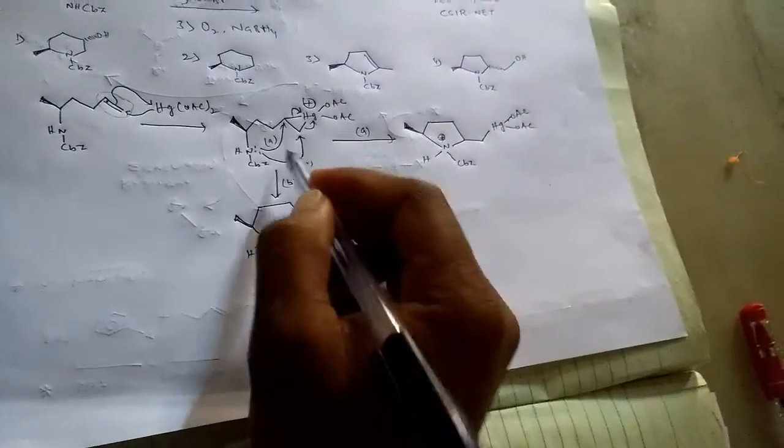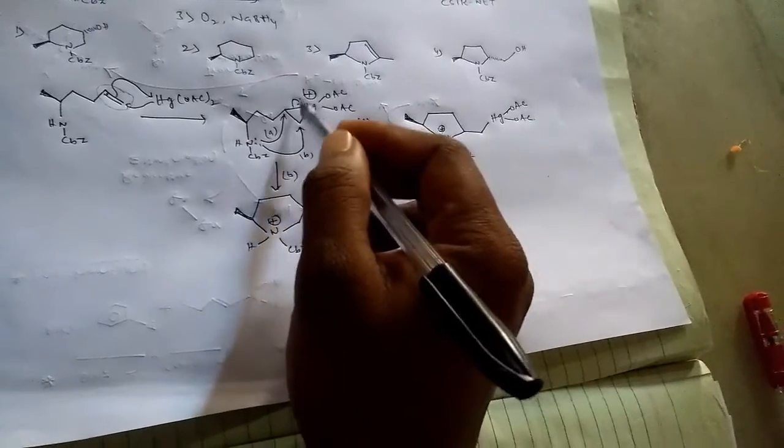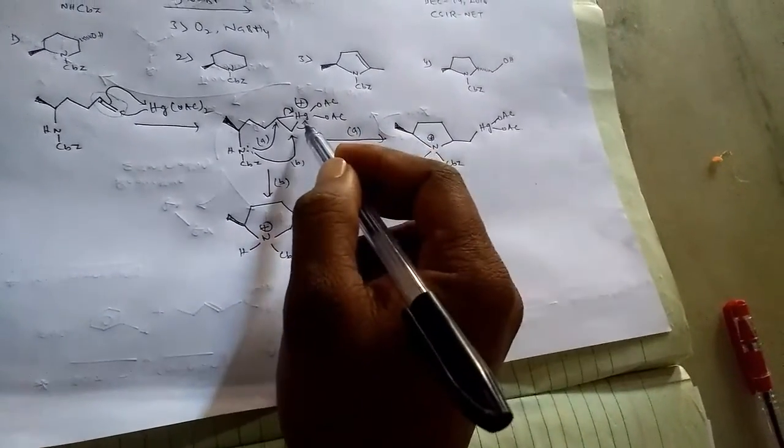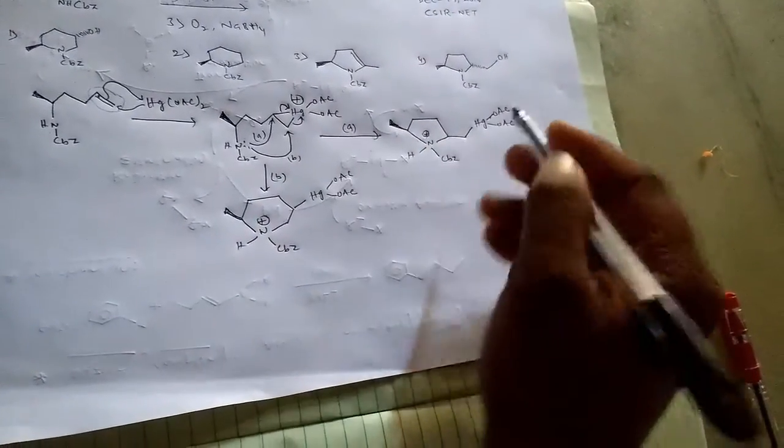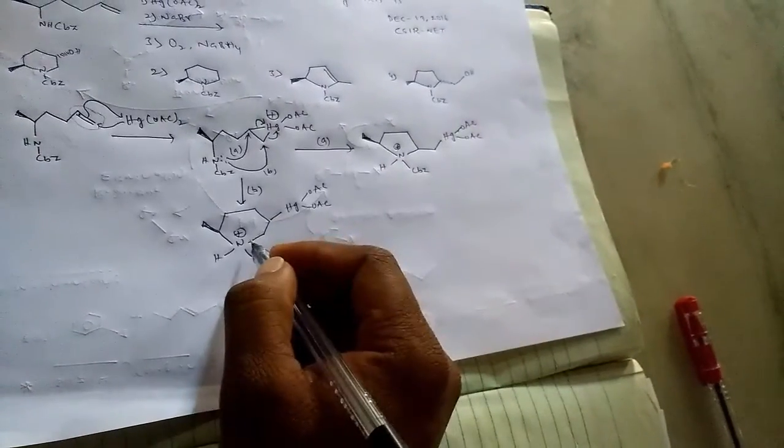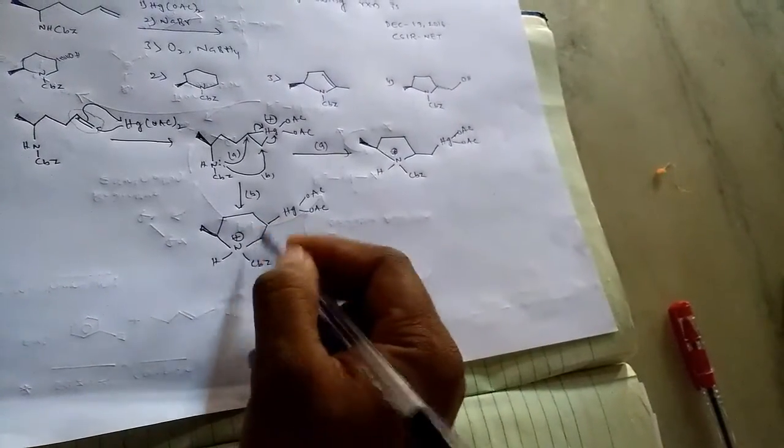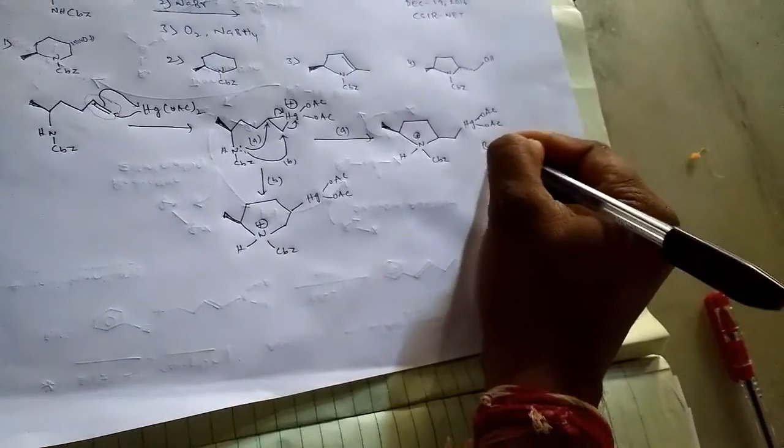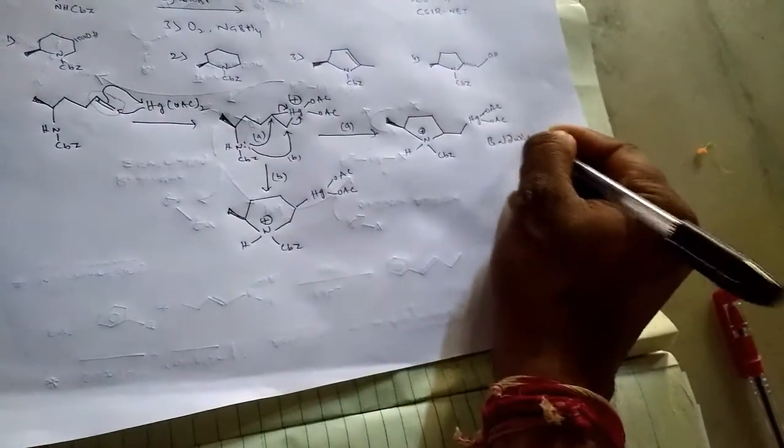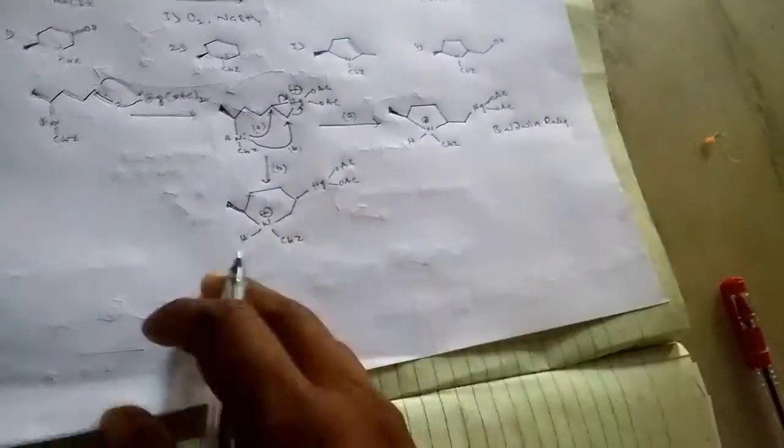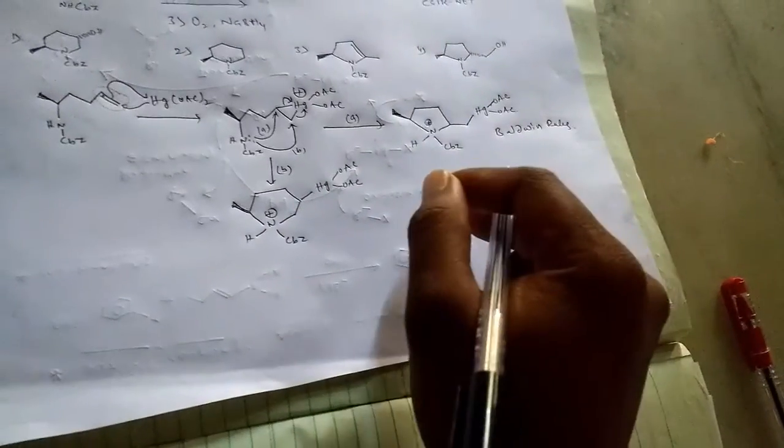But the five-membered exo-trig, trigonal ring is favored when we compare with six-membered ring. So these are all from Baldwin rules. These two are possible according to Baldwin rules.